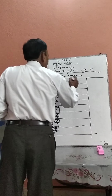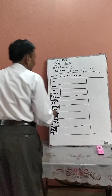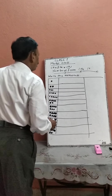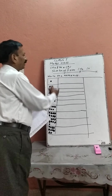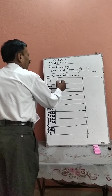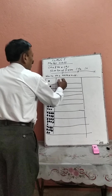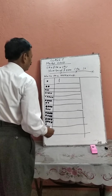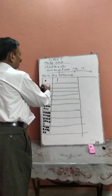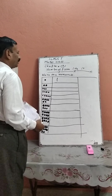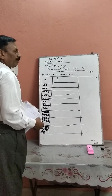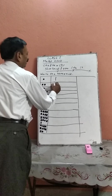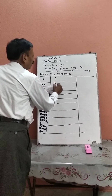Write the numerals. There is one object in the box, therefore you should write the number 1. Next, there are two objects in the box, then you should write the numeral 2.